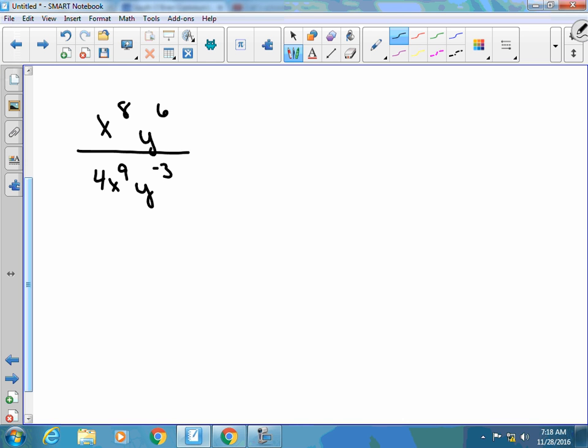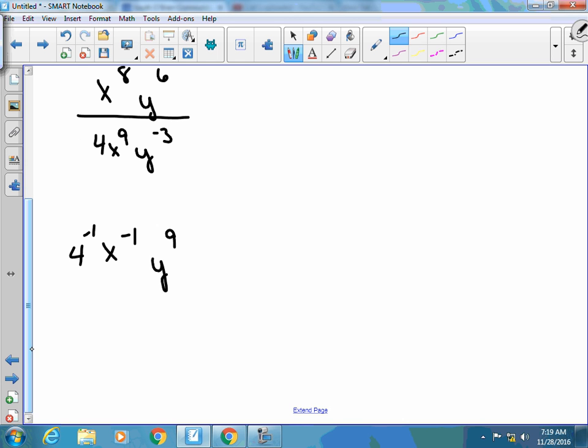So, I've got now, using subtraction, 4x to the negative 1, y to the 9th because I'm subtracting. Actually, let's leave it as 4 to the negative 1. And then the y is 6 minus negative 3 to give me a positive 9. The 4 is that negative 1 because the 4 is in the denominator, so we've got to move that to the bottom of our fraction.